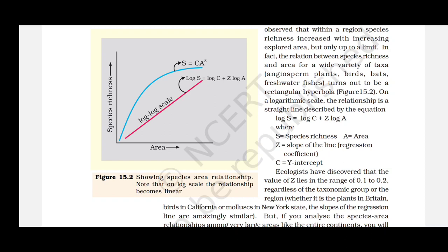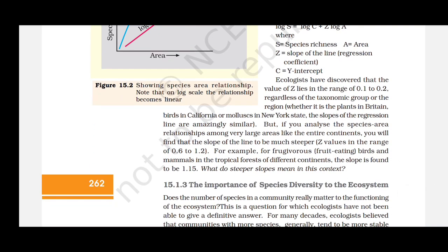Ecologists have discovered that the value of Z lies in the range of 0.1 to 0.2 regardless of the taxonomic group or region — whether plants in Britain, birds in California or mollusks in New York state. The slopes of the regression lines are amazingly similar. However, when analyzing species-area relationships among very large areas like entire continents, the slope of the line is much steeper, with Z values in the range of 0.6 to 1.2. For example, for frugivorous birds and mammals in tropical forests of different continents, the slope is found to be 1.15.